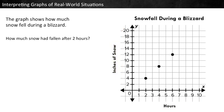How much snow had fallen after 2 hours? The x-axis represents hours, so locate 2 on the x-axis, then move up until you find the point. The y-axis represents inches of snow, so move left from this point to find what y-coordinate it corresponds to. The y-coordinate is 4, so 4 inches of snow had fallen after 2 hours.